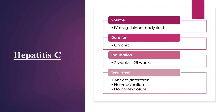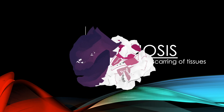For hepatitis C, sources include IV drug exposure and bodily fluids, and it is caused by a virus. It is a chronic infection and symptoms appear two weeks to 25 weeks after exposure. Treatment begins with antiviral and interferon therapy. Importantly, there is no vaccination for hepatitis C — unlike hep A and hep B which both have vaccines. Post-exposure prevention is also important.